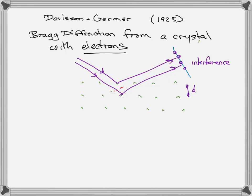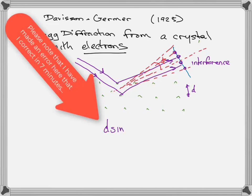If there was no diffraction interference and simply reflection, what you find is that you get interference fringes at angles phi from the original path. Those interference fringes in Bragg scattering are found at d sine phi equals n lambda. So that's just a regular interference condition.